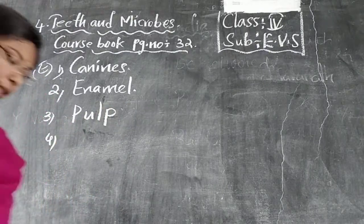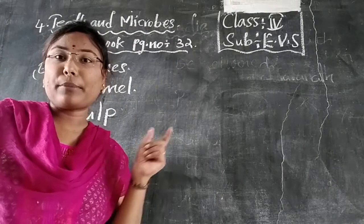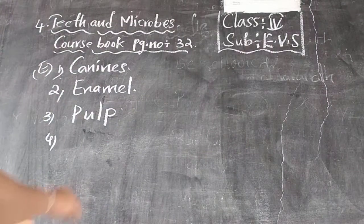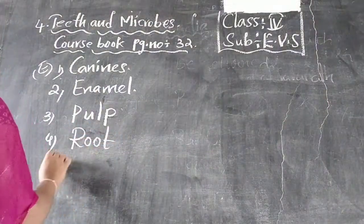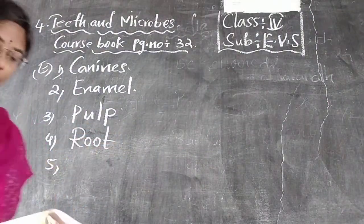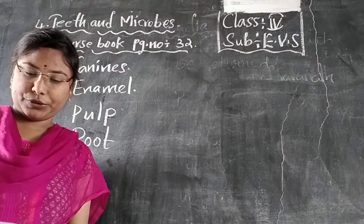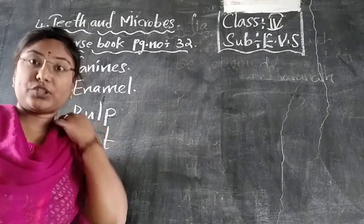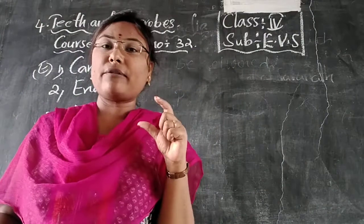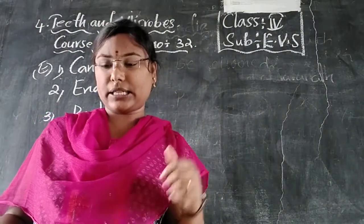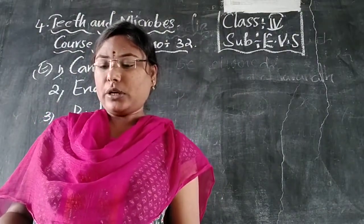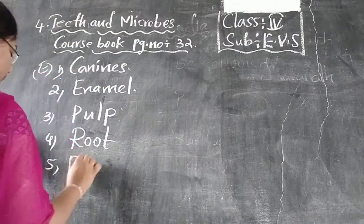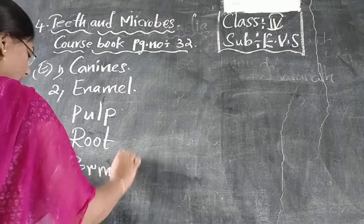Fourth question: the part of the tooth present inside the gum. It is the root. Next, teeth which are used to tear the food — tearing means to shred. The teeth used to tear the food are premolars.